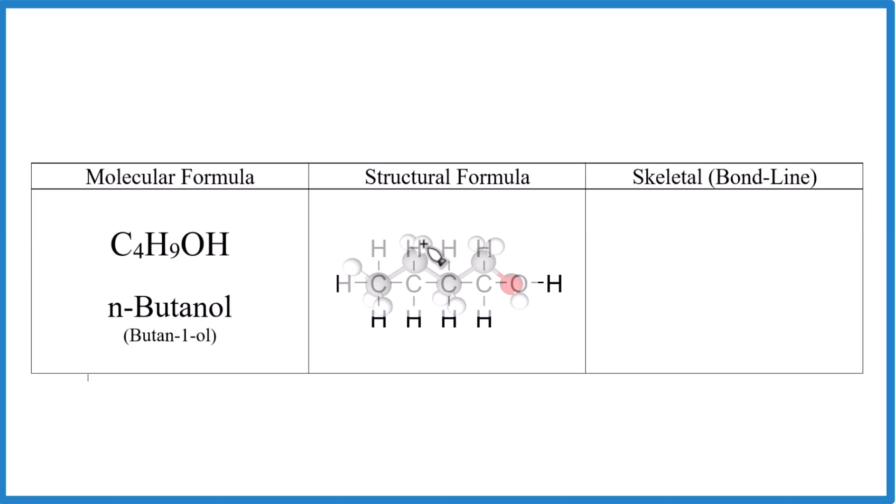If we want the skeletal formula, we're just going to draw lines between the carbons like this. And then we'll put an OH on the end of that. And that's going to look like this.